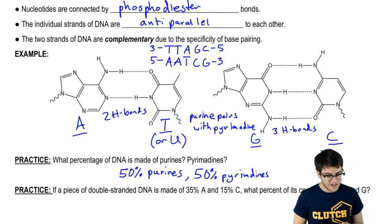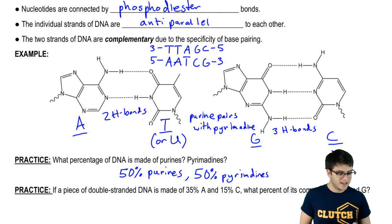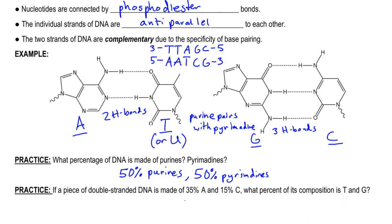So thinking about this, if we have a piece of double-stranded DNA, and we know that 35% of it is adenine, and 15% is cytosine, how much thymine and guanine do we have? Well, the percentage of adenine we have should, in theory, be equal to the percentage of thymine, because those two are always going to pair with each other, so we'd have 35% thymine. And same goes for cytosine and guanine, so then we'd have 15% guanine.